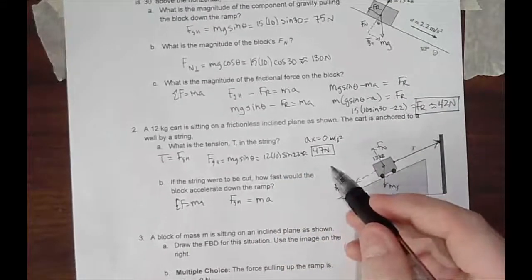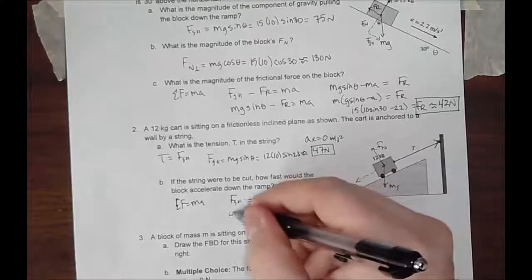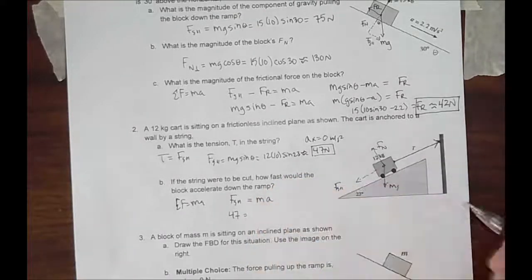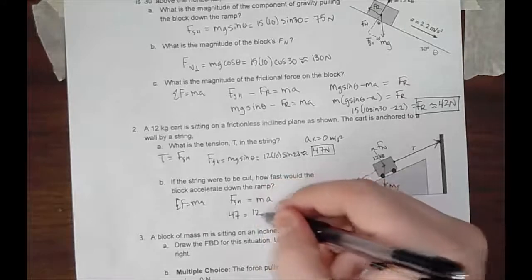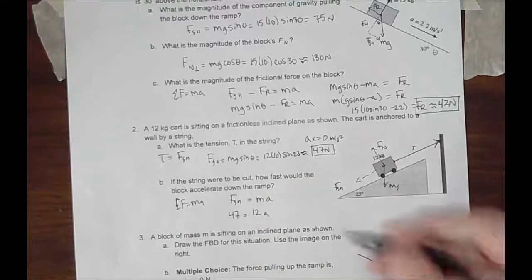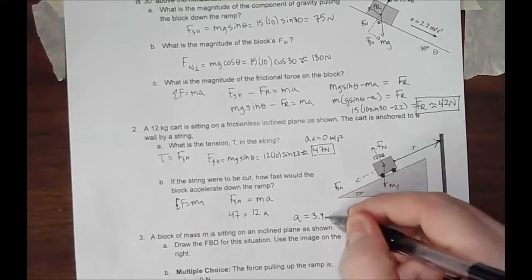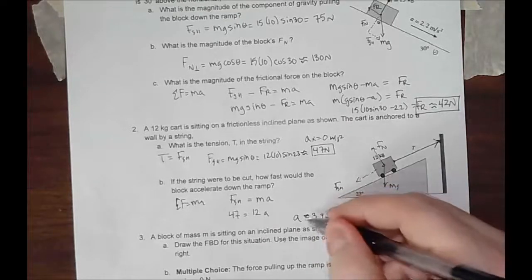If we know the force, the component of gravity is 47, so the component parallel to the ramp is 47. And we know the mass of this object is 12. We can then find A. And the acceleration will be 3.9 meters per second squared, approximately.